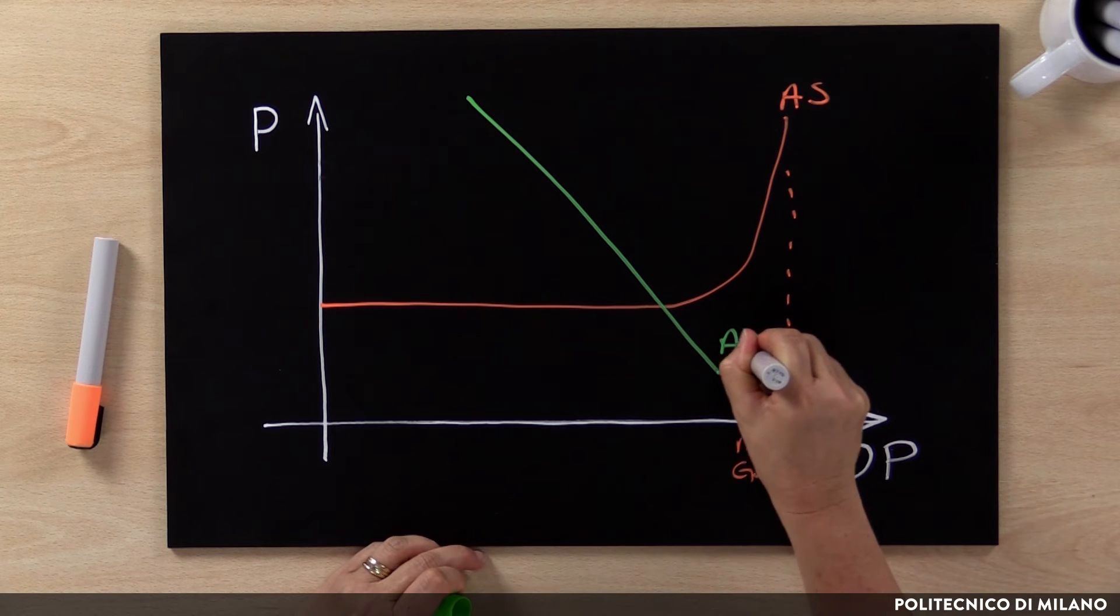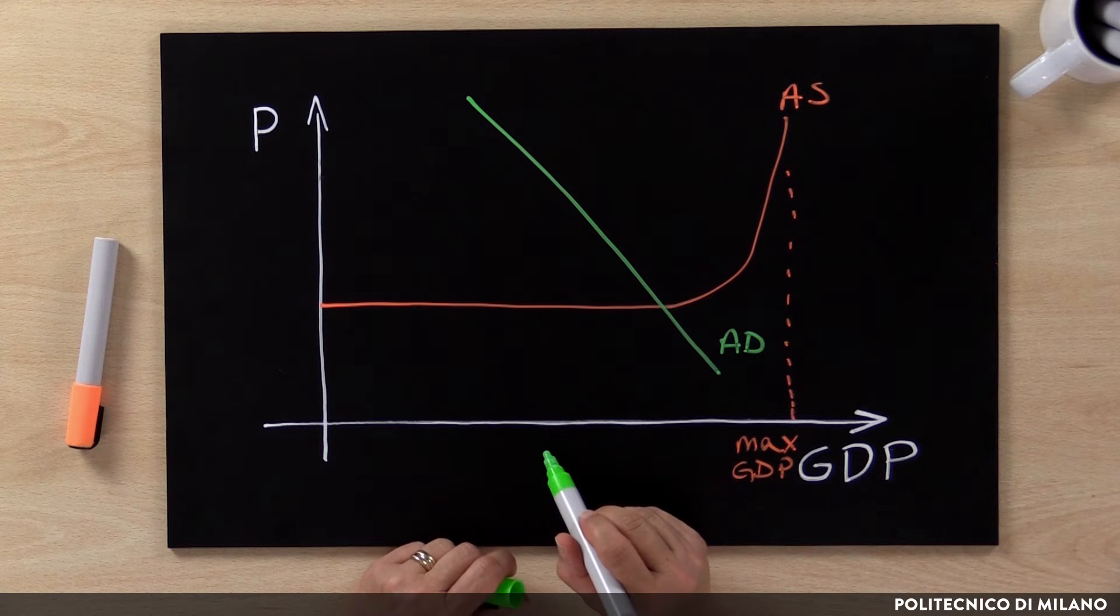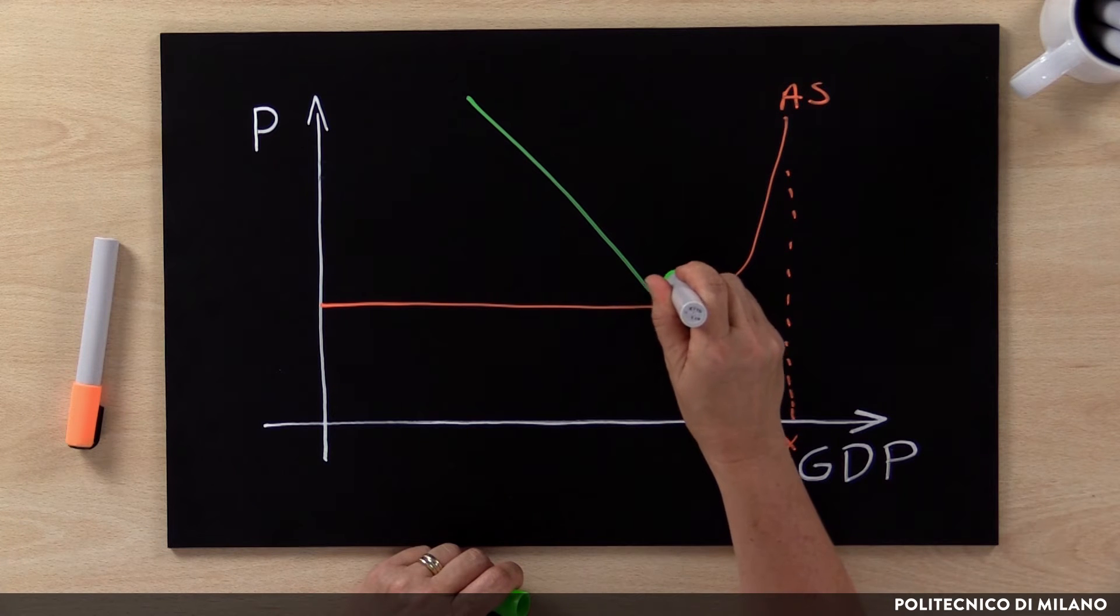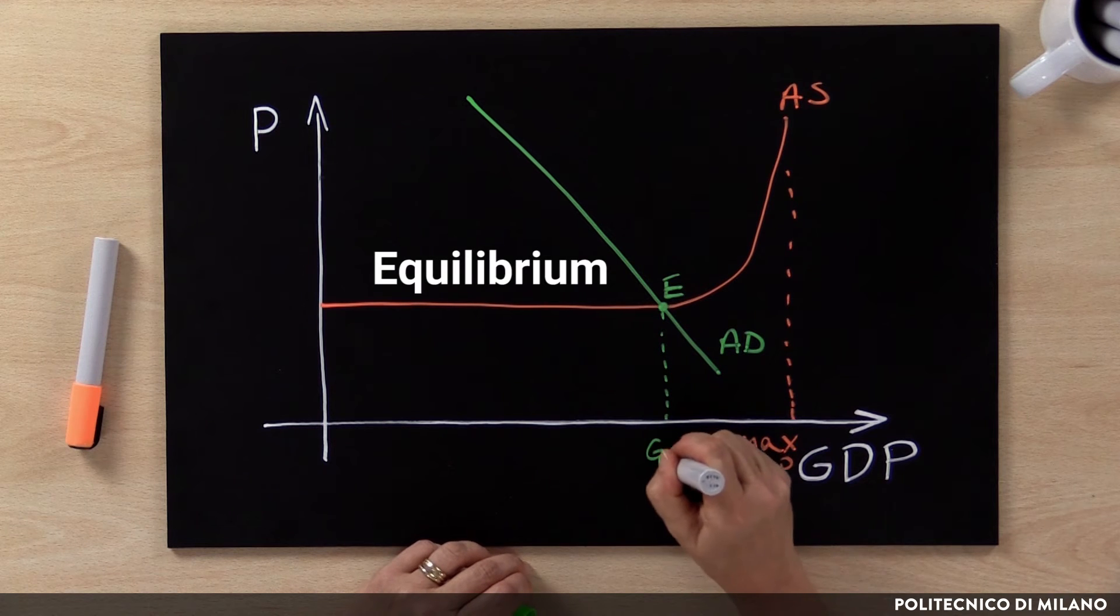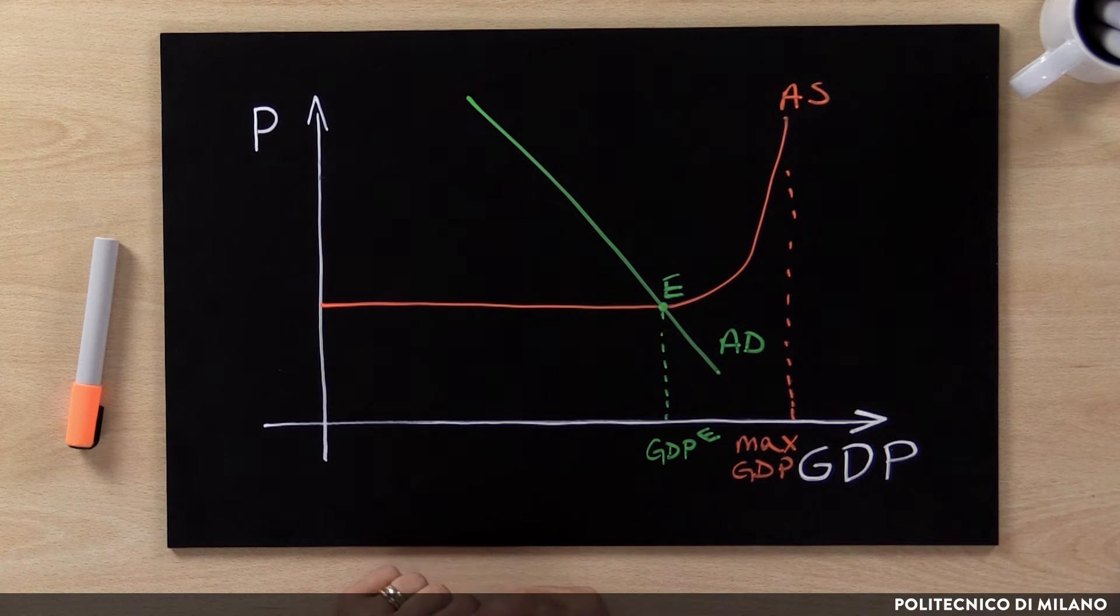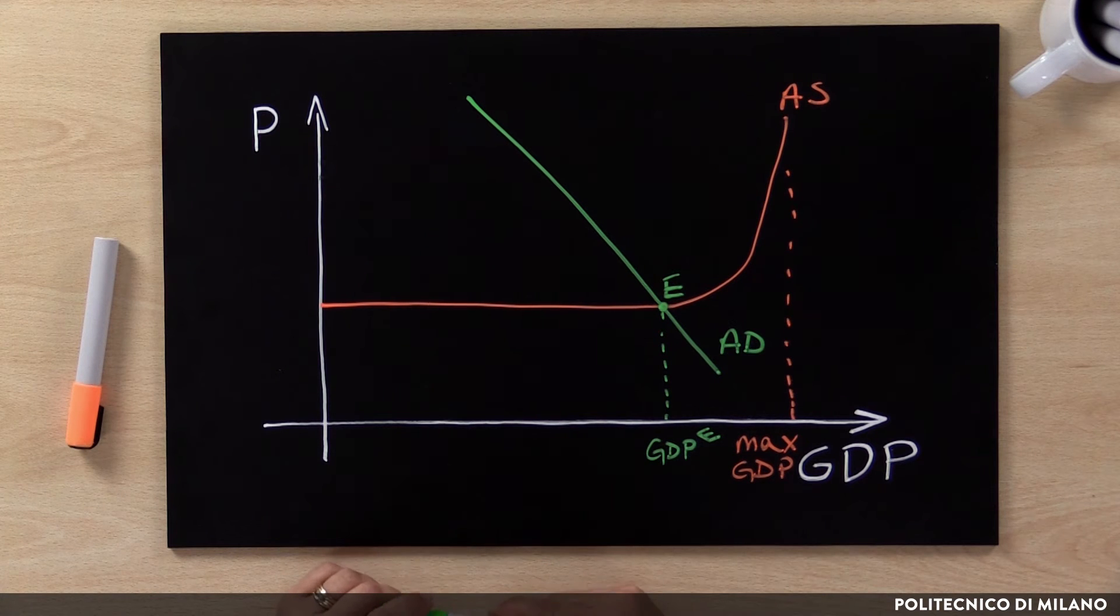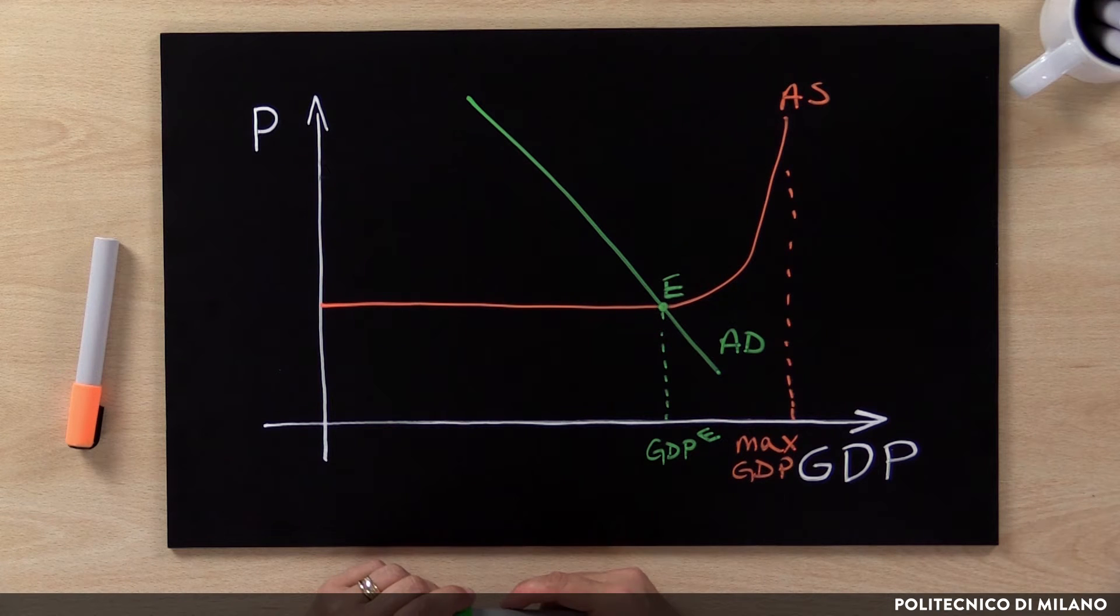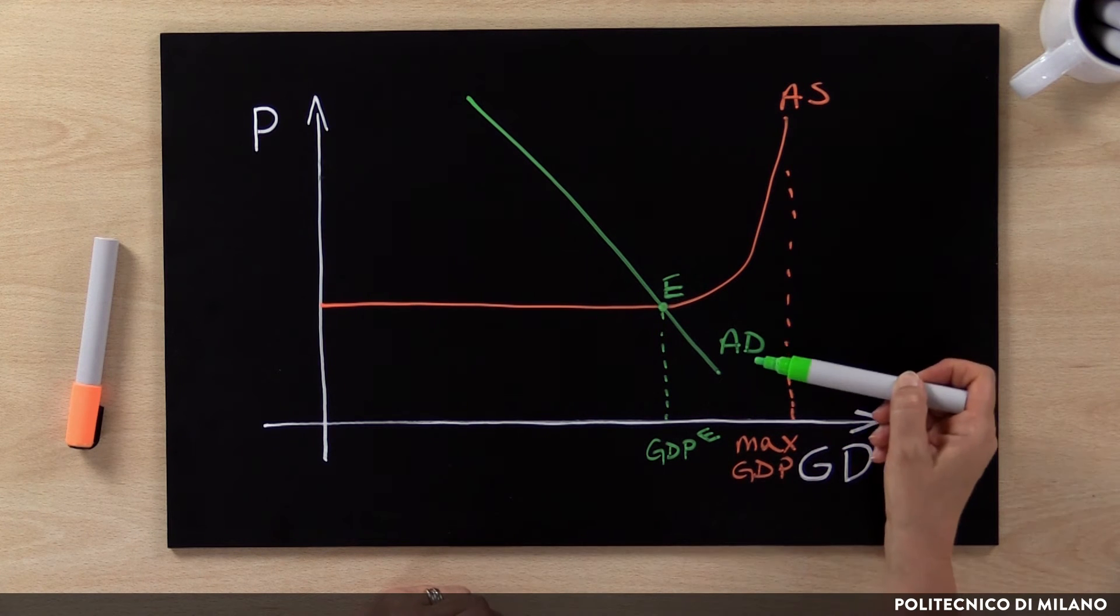Aggregate demand is represented by a downward sloping line intersecting aggregate supply. And equilibrium, that is the level of GDP that we actually observe, is given by the intersection of these two lines. At equilibrium, what we assume is that demand is fully satisfied and supply is also satisfied. In equilibrium, consumers get what they want and firms produce without having too many or too little inventories. In this sense, the intersection is an equilibrium as it satisfies aggregate supply and aggregate demand.